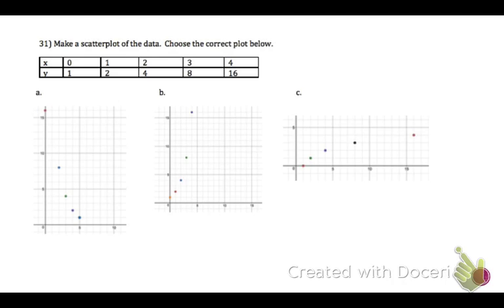We're going to do the same thing on 31 as we did on 30. Make a scatter plot of the data. They're made for us. We're just going to choose the correct one below. So first, I'm going to look for my first point, 0, 1. Right away, I can eliminate A, because I do not have a point there. I can also eliminate C. So I'm just going to check my other points on graph B. So I've got the point 1, 2, and that looks good. I've got the point 2, 4, yes, 3, 8, and 4, 16. So these all are in the correct location. So B is the scatter plot that I'm looking for.